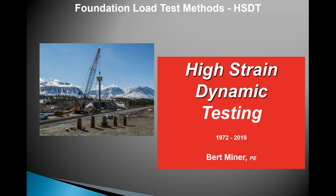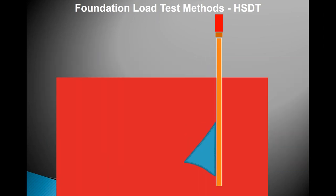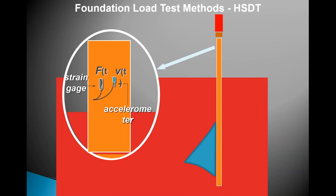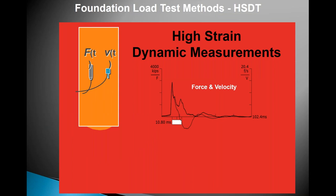Since 1972 dynamic testing has become quite pervasive, as we've seen today. We know there's a wave that goes down the pile; as that happens we can make force and velocity measurements — what we call dynamic measurements. From simple arithmetic, we can separate from the force and velocity the nature of the wave going down and the wave going up.